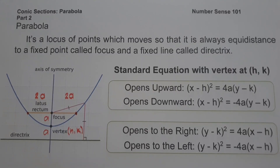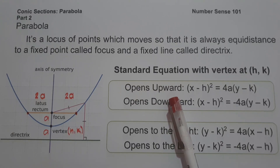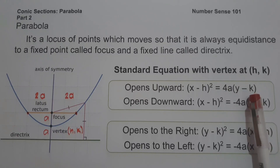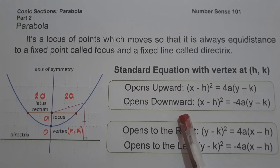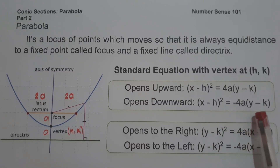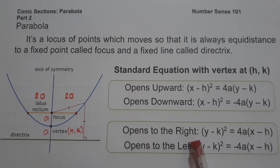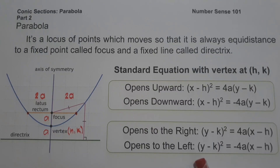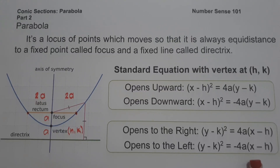We have different forms of equations to remember. If the parabola opens upward, we use the formula (x − h)² = 4a(y − k). If the parabola opens downward, we use (x − h)² = −4a(y − k). If the parabola opens to the right, we use (y − k)² = 4a(x − h). And if the parabola opens to the left, we use (y − k)² = −4a(x − h).